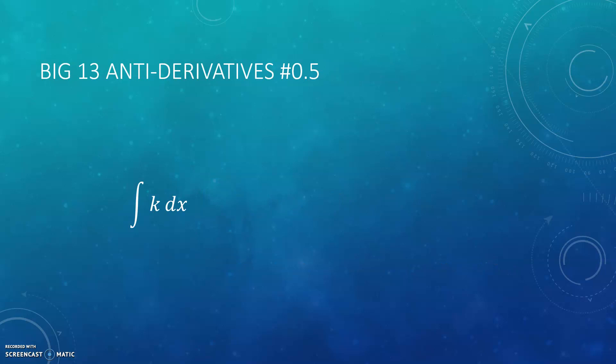I call these the big 13 antiderivative rules, but I'm going to call this one 'one half' — I'm not going to count it as one of the big 13. If you have a constant and you take the antiderivative of a constant, you get k times x. This is kind of the reason I'm not counting this as a big antiderivative: if I tell you that your function has a slope of one half, you can say it's going to be one half x plus b. So this is kind of a pre-algebra kind of antiderivative.